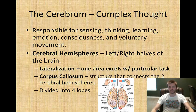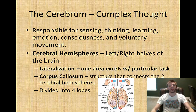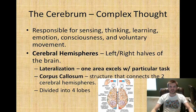The cerebrum is the center of complex thought — it is where you are really thinking, learning, experiencing emotions, and having consciousness, as well as voluntary movement. Your brain is divided up into two cerebral hemispheres, and this is where your brain starts showing dominance between the left and right half. Your brain has lateralization, meaning one part of your brain is dominant in one task while the other half is dominant in another. For example, the left half of your brain is more dominant for logical thinking, while the right half is more dominant for visual-spatial analysis.